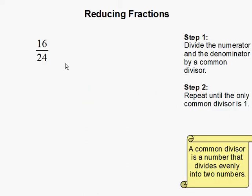Reducing fractions. Reducing fraction is to turn a fraction into its lower equivalent form. So in this case, we have 16 over 24, and we are going to turn it into a smaller equivalent fraction.